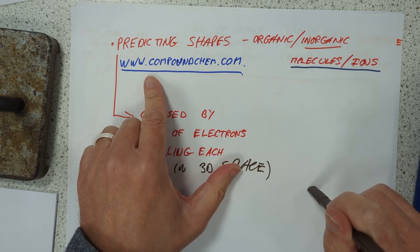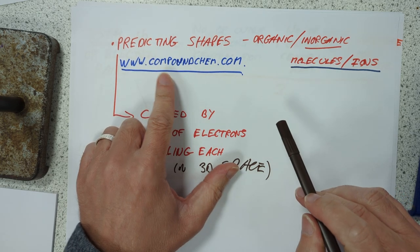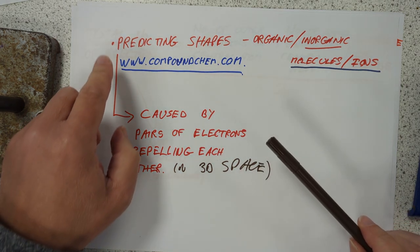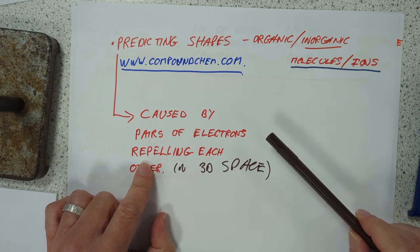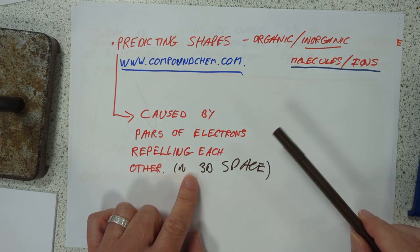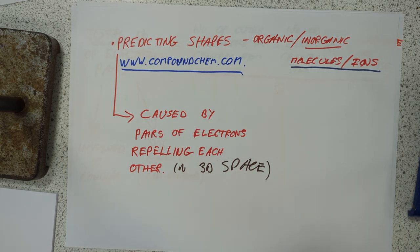I'm going to use a resource from compoundchem.com, an excellent chemistry website run by Andy Brunning. Go and have a look, go and buy his book. It's really good. And basically what happens here is pairs of electrons repel each other in three-dimensional space. They try and get as far away from each other as possible, and that influences the shape of the molecules that you can see in real life.